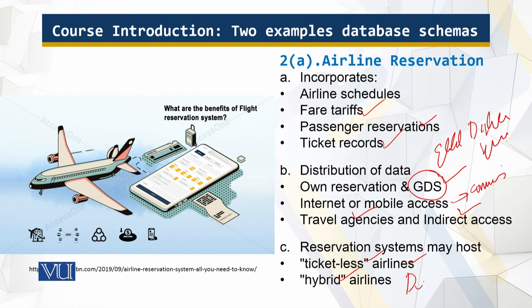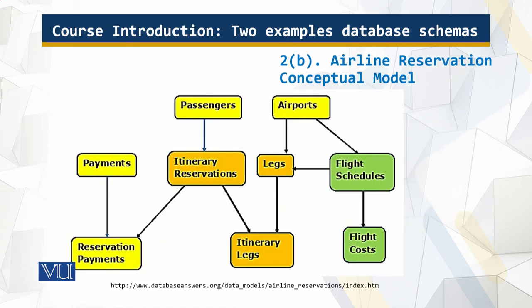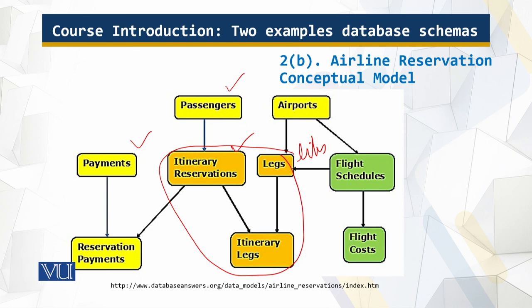Looking at the schema, you can see we have reservations, and these are the legs which are the links. We have passenger payments, itinerary legs, flight schedules, and flight costs — everything is linked together. This is the conceptual model of the airline reservation system. And this is all I have for this module. Thank you for your time.